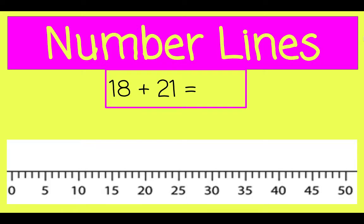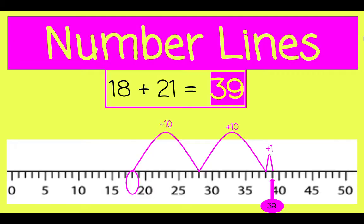Let's look at another question, beginning on 18. We don't have 18 written on the number line, so we just have to count those ticks between 15 and 20. Let's do 21 jumps. There's a jump of 10, another jump of 10, and that brings us to 21 jumps. We landed on 39, and 39 is our sum.